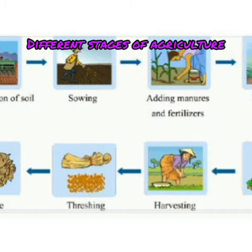Next is sowing. Sowing is the act of planting seeds in the soil. To get a good yield, it is important to sow good quality healthy seeds. Next is adding manure or fertilizers.